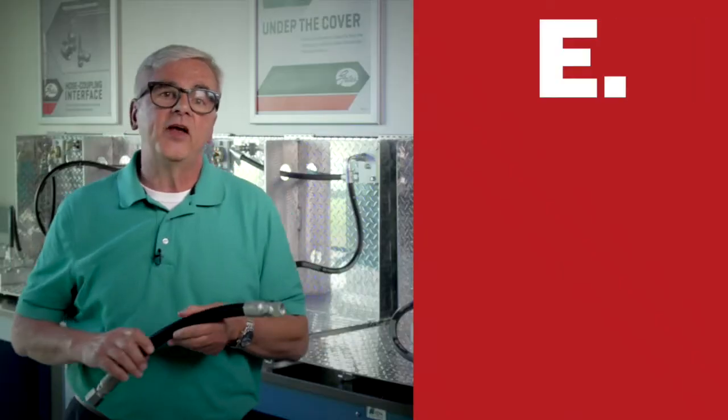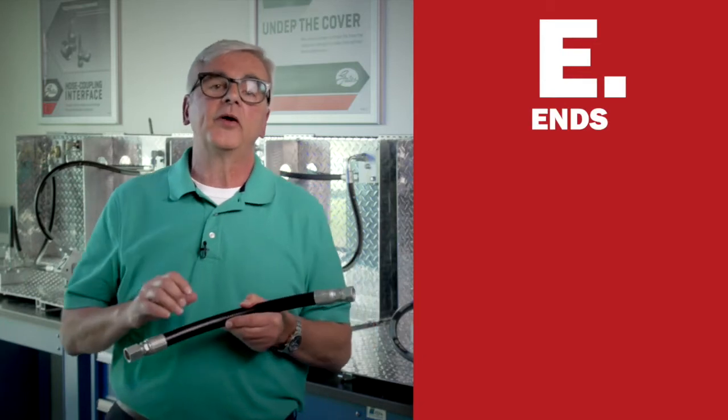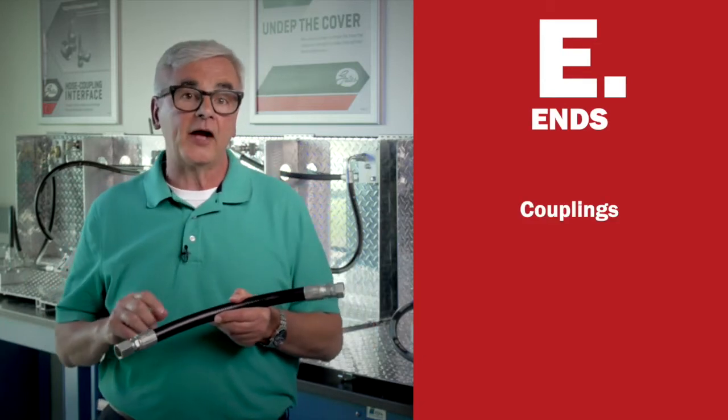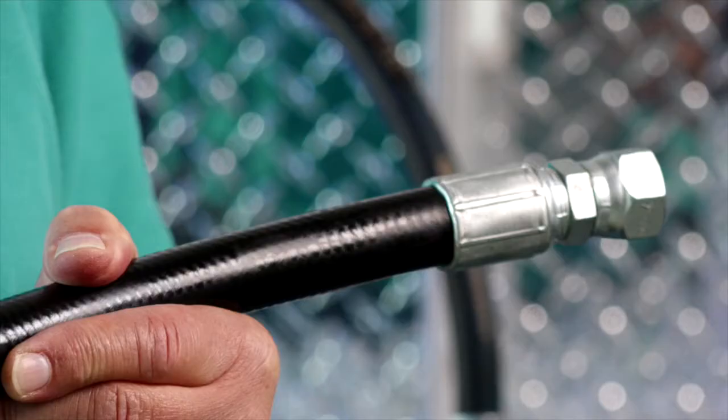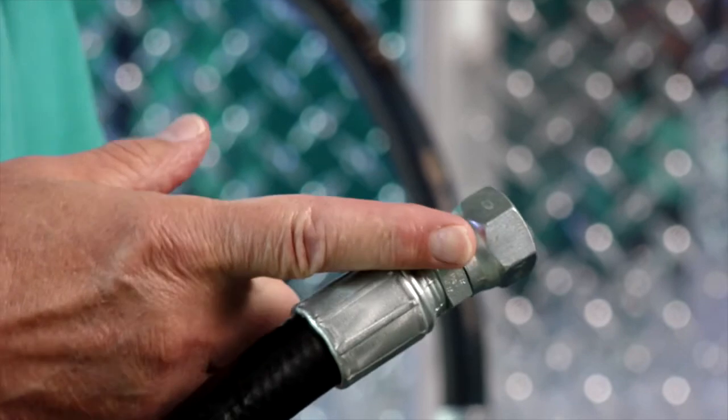The E stands for ends. These are the couplings that you're actually going to put on the end of the hose to attach it to your equipment.